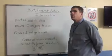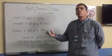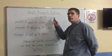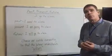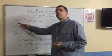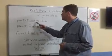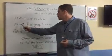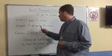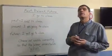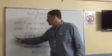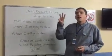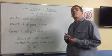Let's take, for example, the phrase: 'I go to class.' We want to make sure the listener understands when I go to class. Let's say this happened yesterday — past: 'I went to class.' Let's say this is happening right now, today — present: 'I am going to class.' And let's say this is going to happen tomorrow, in the future: 'I will go to class.' Three very similar sentences, however, all of them have different meaning.